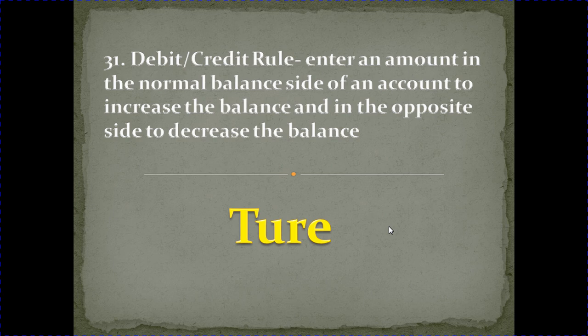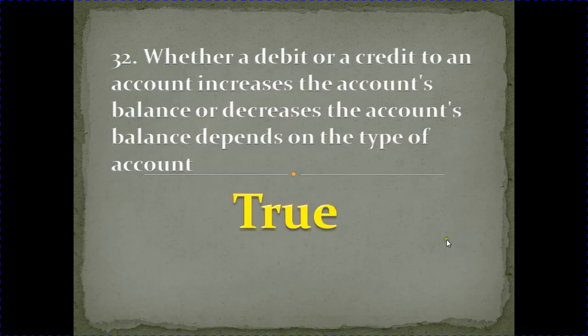One side of the normal side of an account is credit or debit. The other side is just opposite. This is a true statement. The next one is: whether a debit or credit to an account increases the account's balance or decreases the account's balance depends on the type of account.